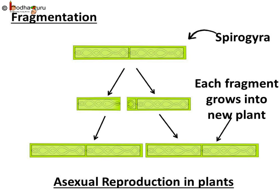Not all animals reproduce through gametes, just like not all plants reproduce through gametes. As we know, the alga Spirogyra reproduces through fragmentation. The thread-like Spirogyra gets broken down into many pieces, and each piece grows into a mature Spirogyra. This was asexual reproduction in plants.